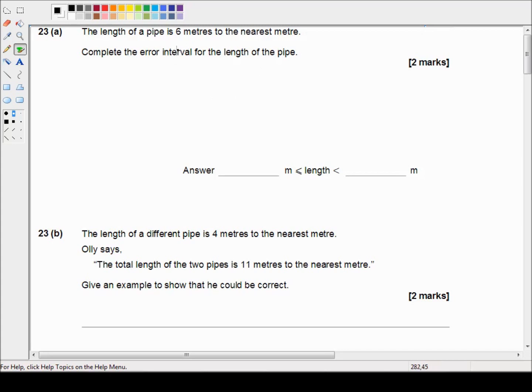So the smallest possible value for six meters is 5.5 meters. That's the smallest number that will round up to six and the largest number that will round down to six is 6.4999999 recurring. So it's less than 6.5 but not equal to 6.5. We can't be 6.5 but we can be just under 6.5. So the error interval is 5.5 meters less than or equal to the length less than 6.5 meters and that's what we call six meters to the nearest meter.